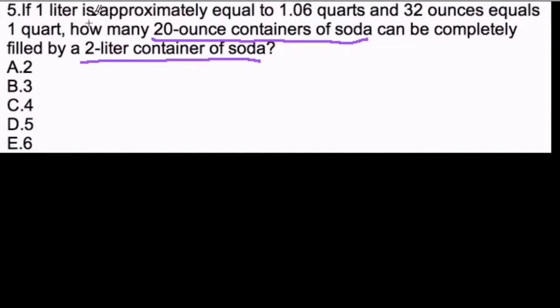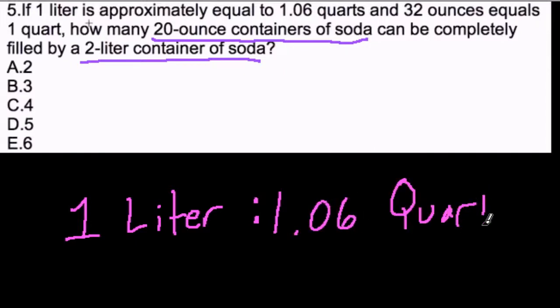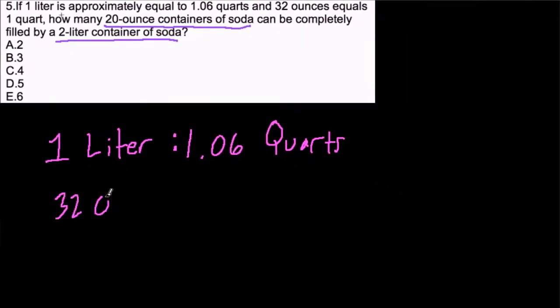So let's look at this. It says that 1 liter is approximately 1.06 quarts. So we have our first ratio: 1 liter for every 1.06 quarts. And then we have 32 ounces for every 1 quart.